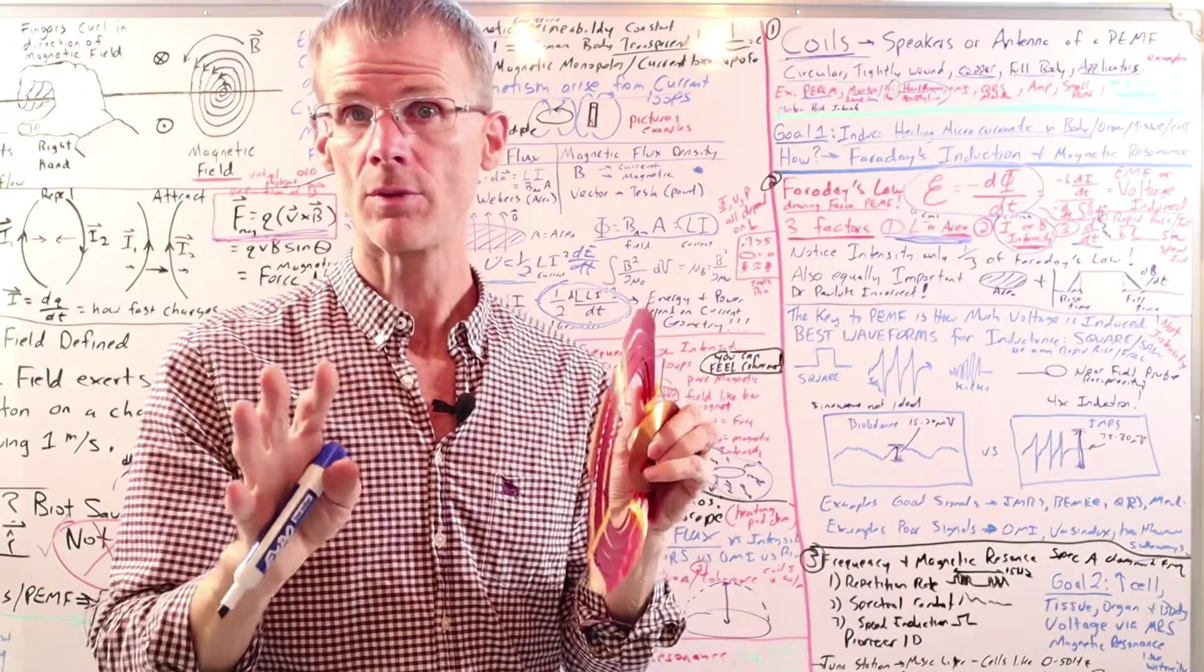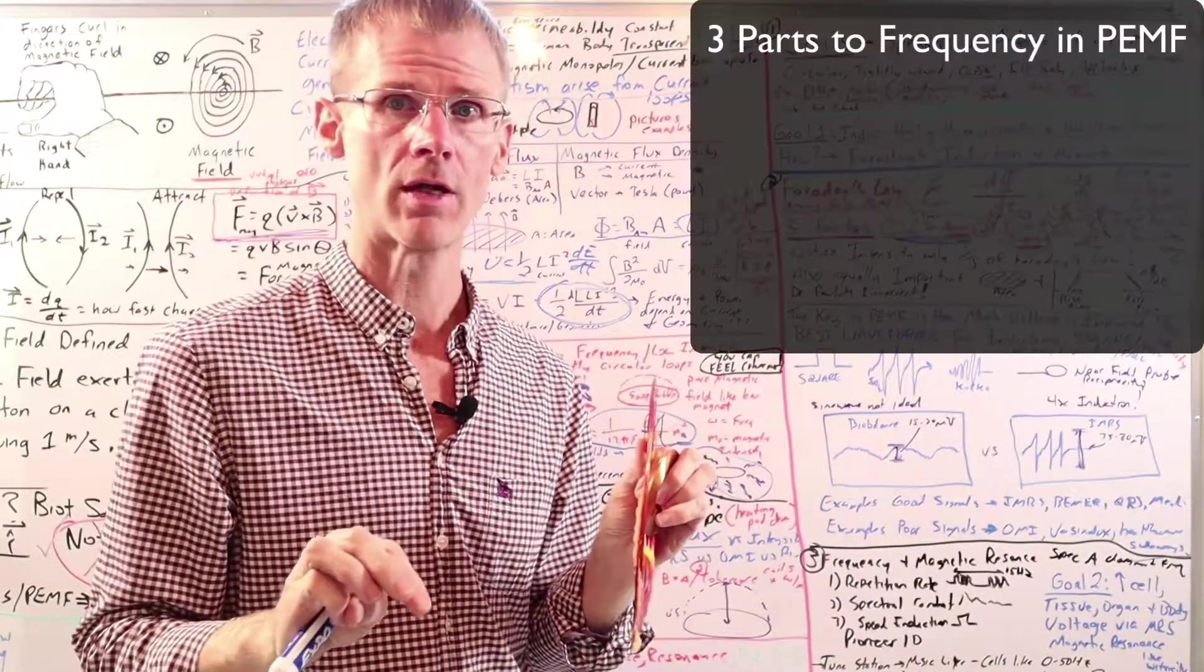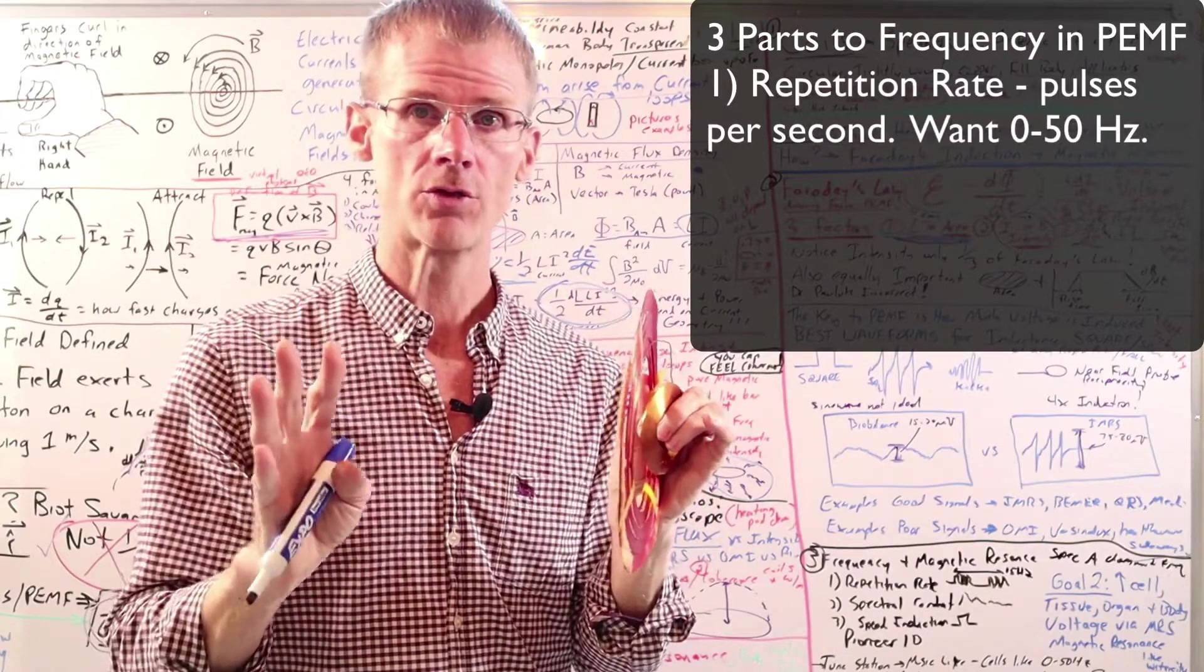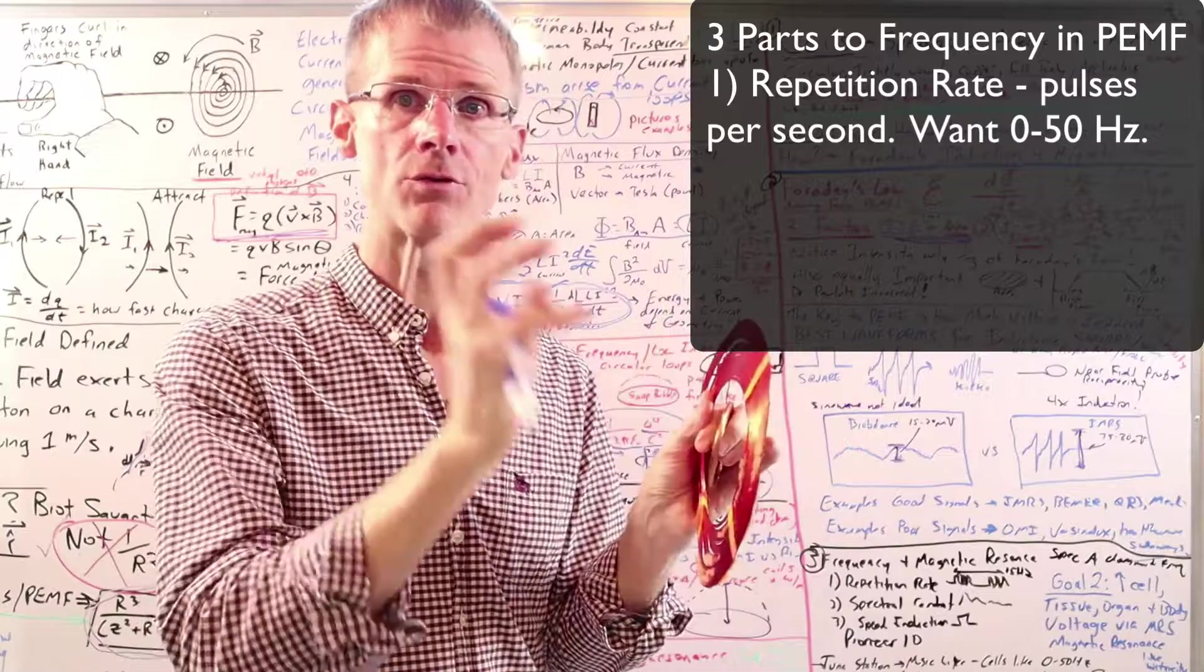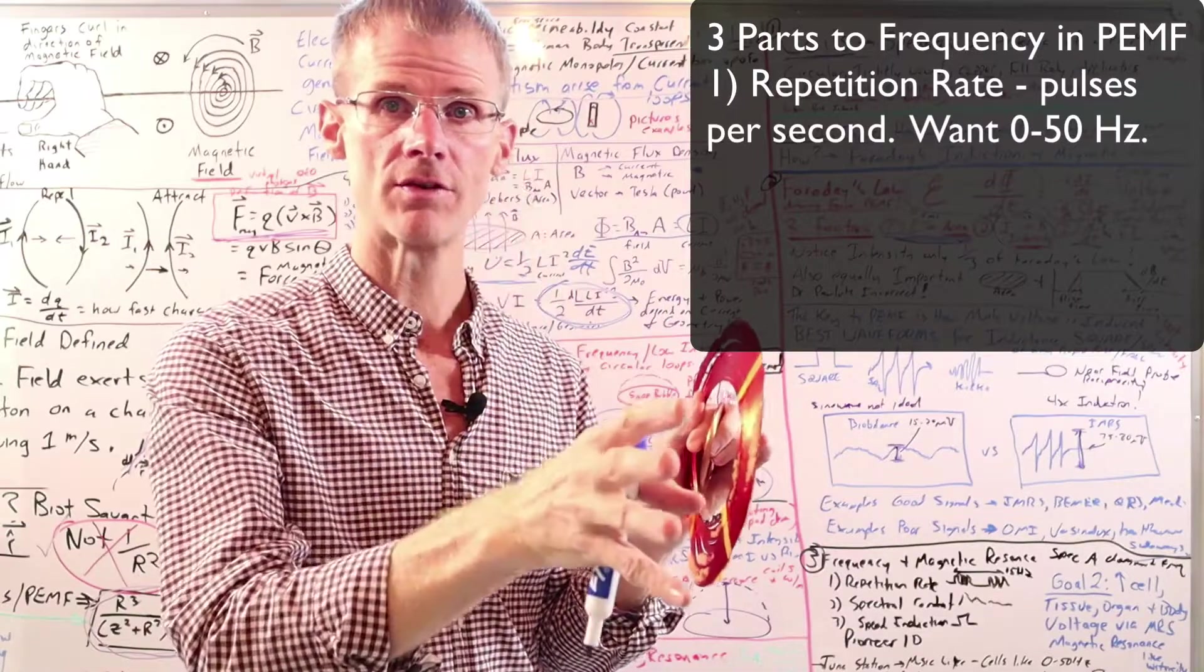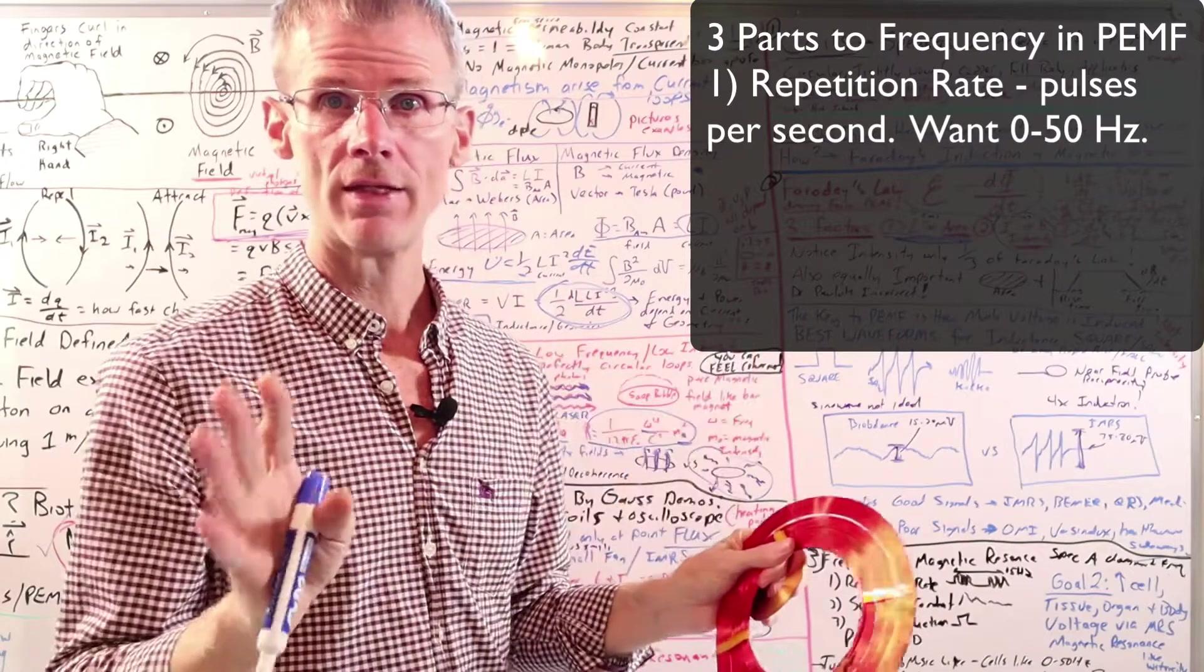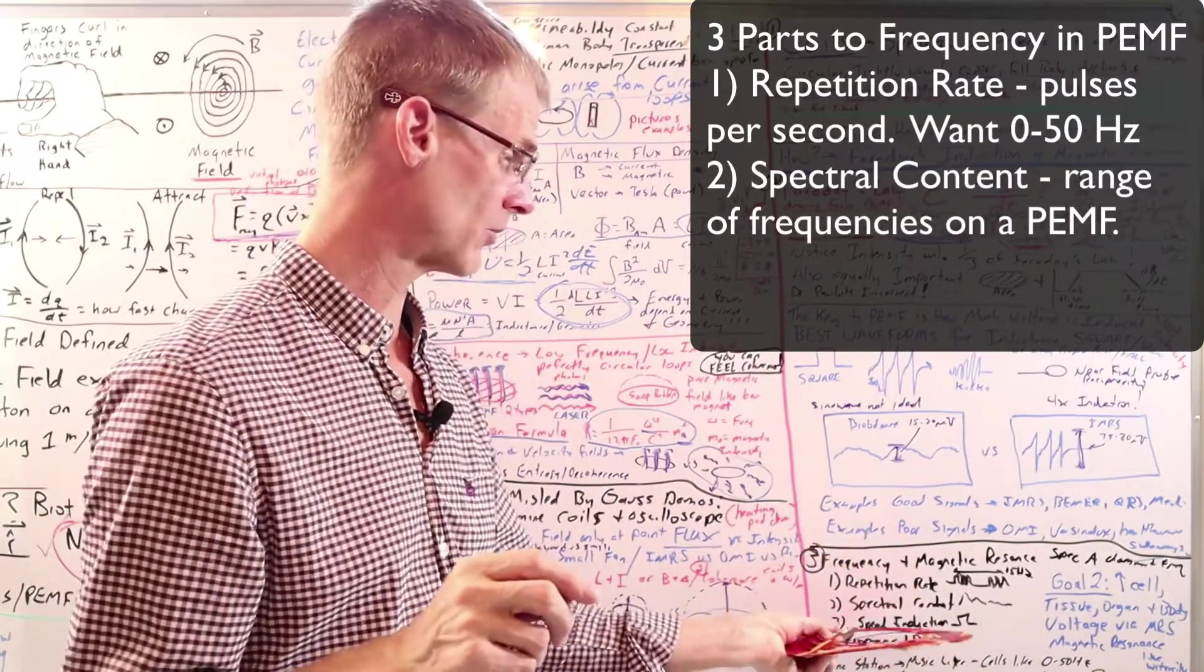So to accomplish frequency resonance, there's really three things we want to look at with regards to frequency in a PEMF signal. So the first is repetition rate, which we want ideally to be 0 to 50 hertz. And that's the frequency of the pulses in a PEMF system. And they can be non-sinusoidal pulses like a square wave or a sawtooth.